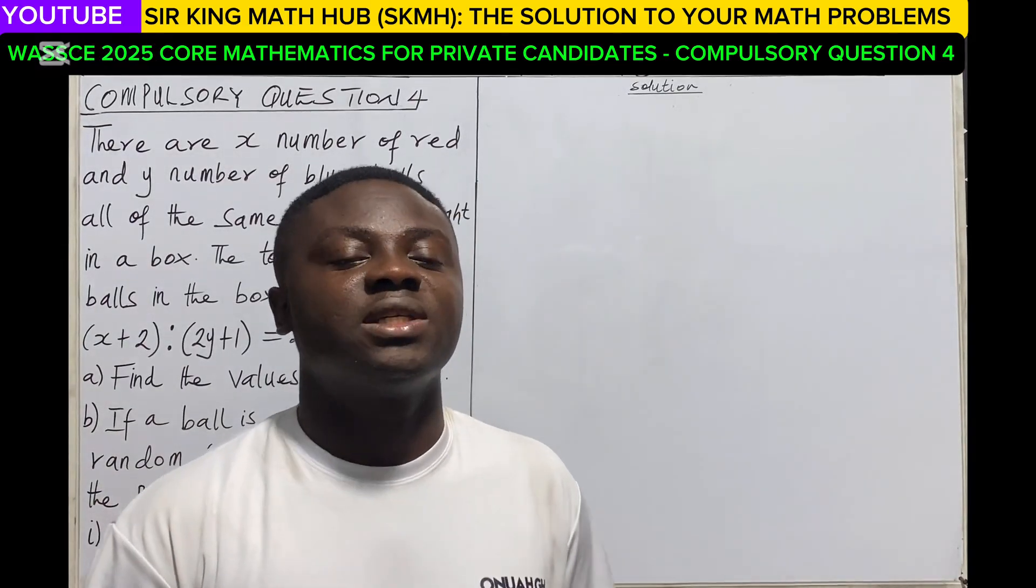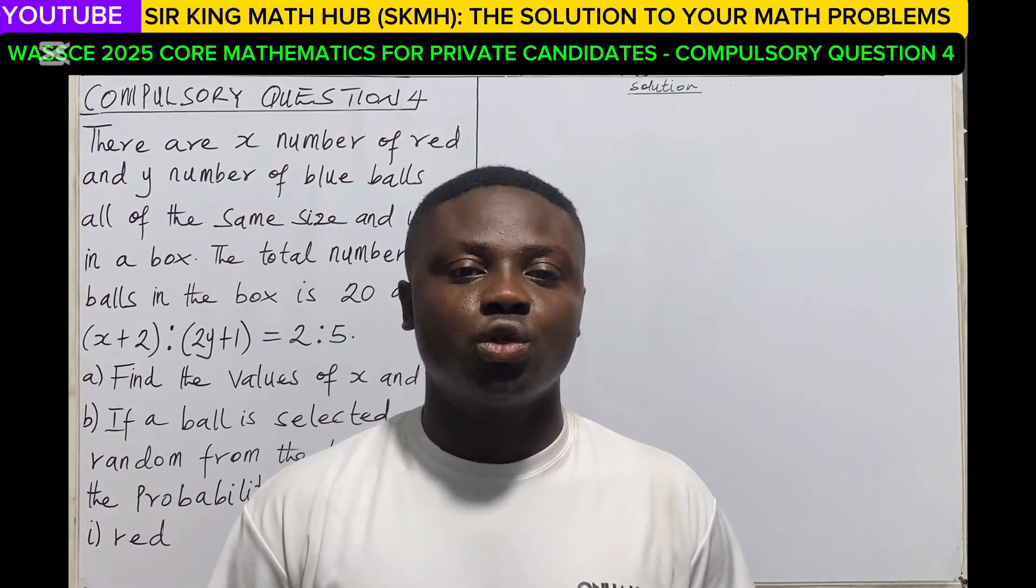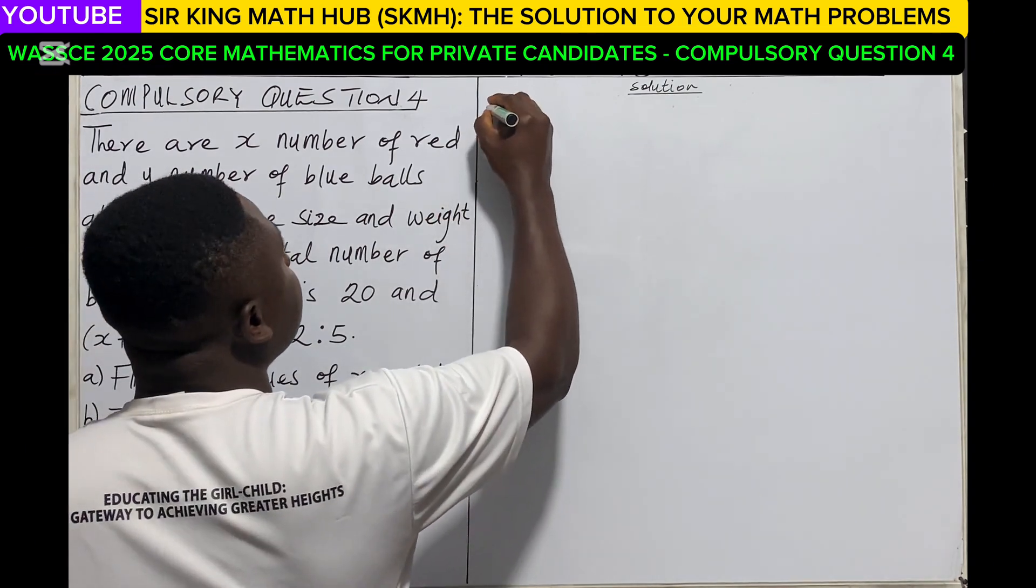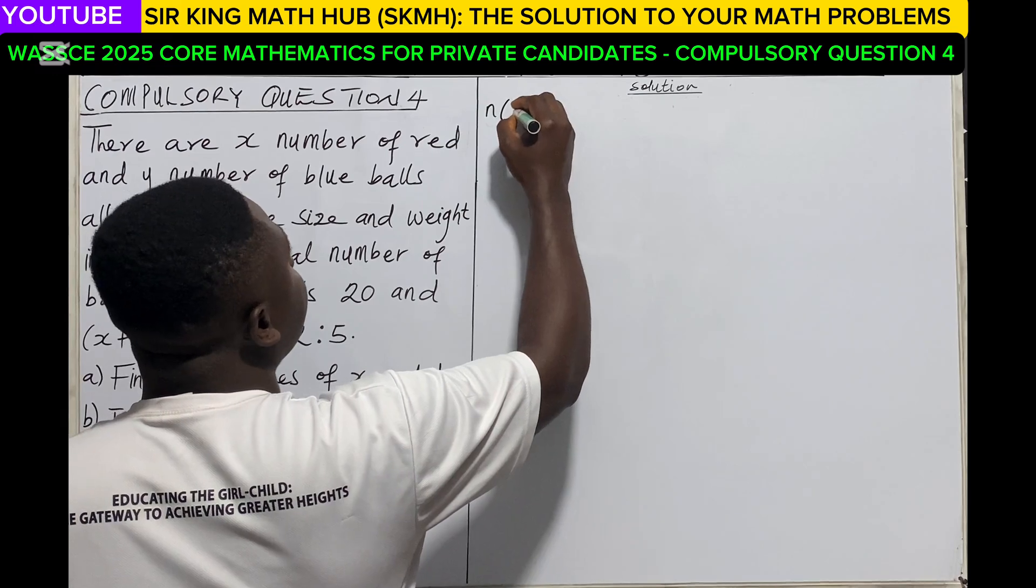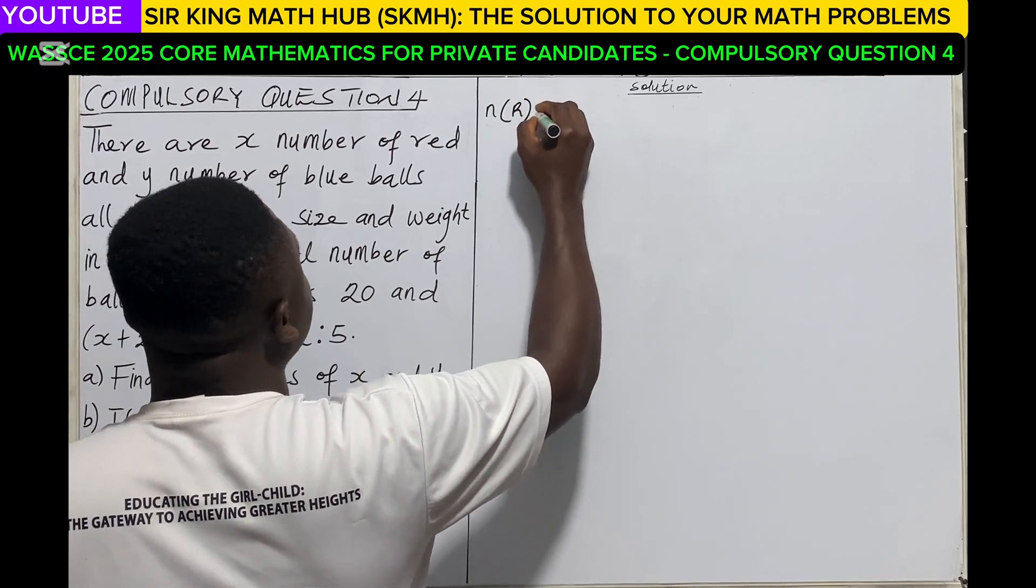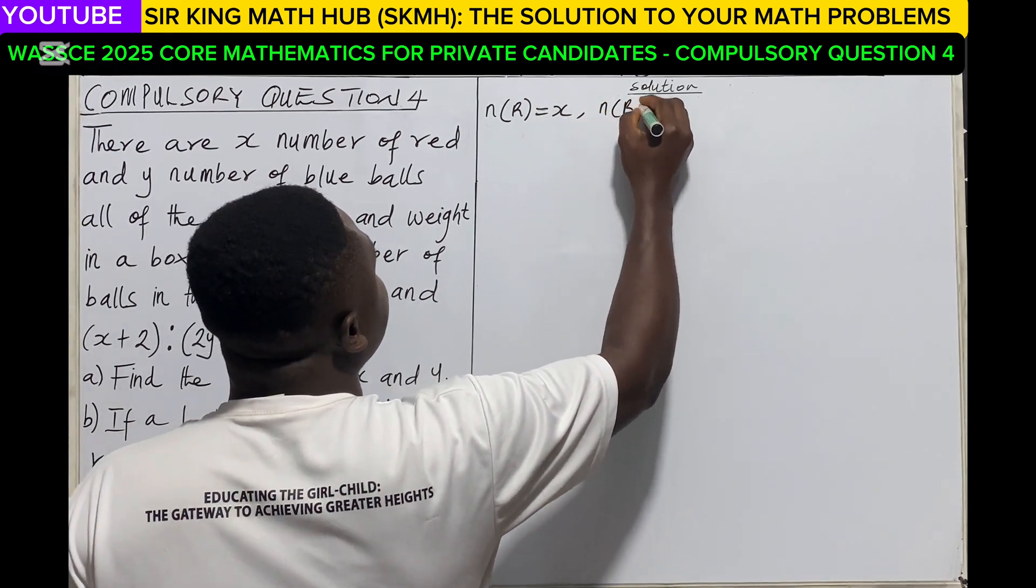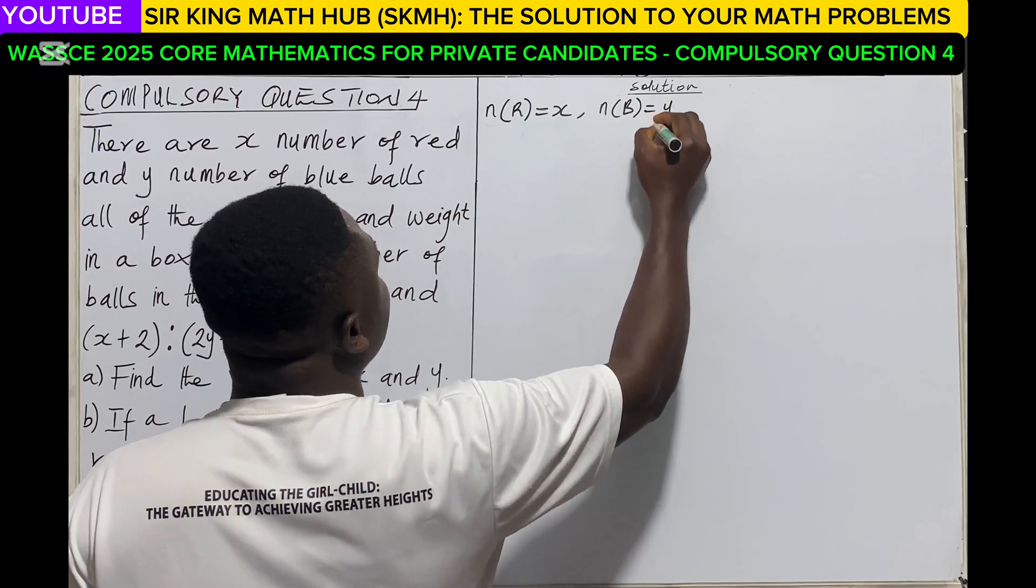Good day viewers, welcome again to my channel Sir King Math Hub, the solution to your math problems. This is WAEC 2025 Core Mathematics for Private Candidates, compulsory question 4. There are x number of red and y number of blue balls all of the same size and weight in a box. So inside the box, the number of red balls is given as x and the number of blue balls is given as y.